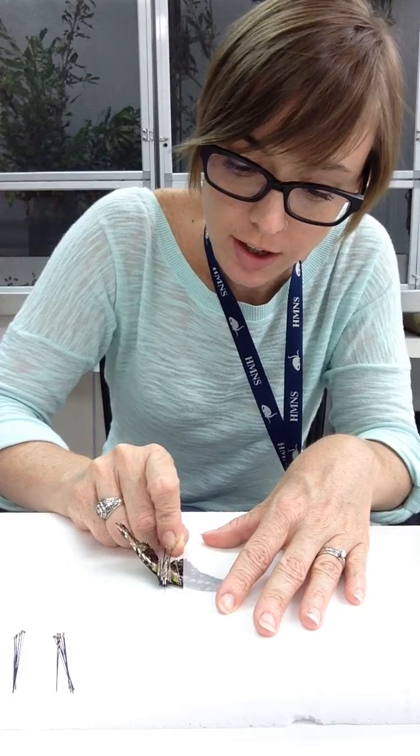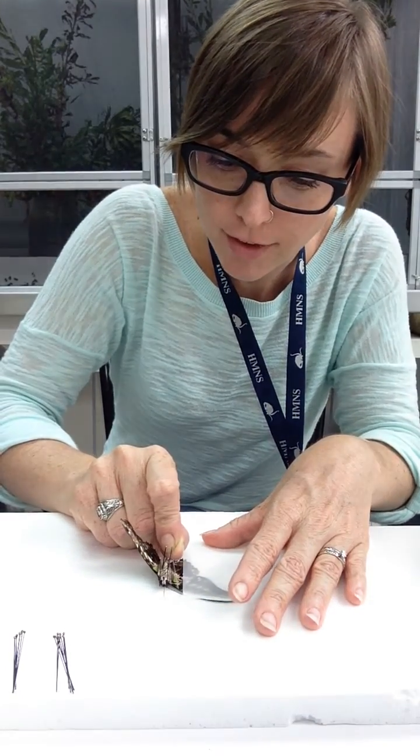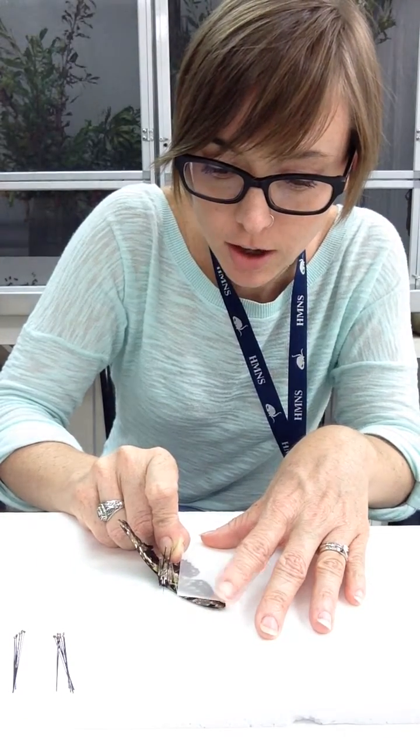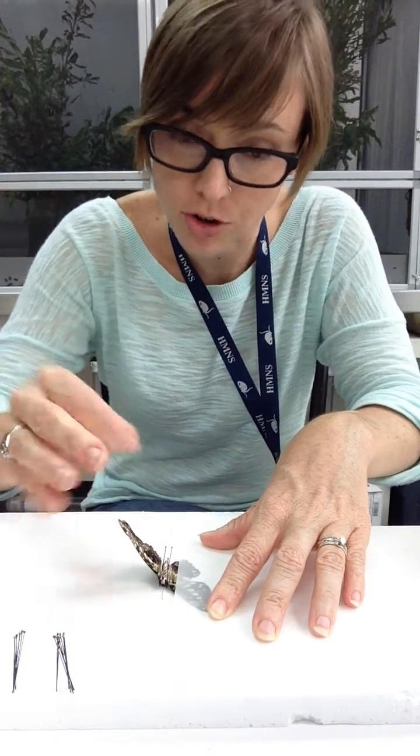This is the strongest vein in the wing and you can use the pin to push, using that vein, push the wing up and keep pushing it up until the bottom margin of the wing is perpendicular to the butterfly's body.